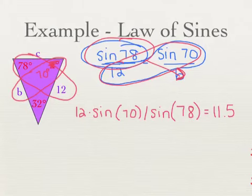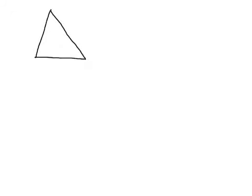There's one situation I left out of your notes that I'd like to do an example for. Find yourself some blank space — I'm going to do another example. Draw a triangle. Let's say this is 42 degrees, this side length down here is 18, and this side length over here is 22, and I'm trying to find this angle. This is law of sines when I'm looking for an angle instead of a side.